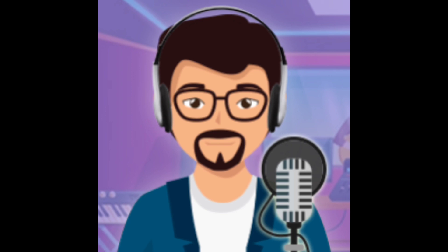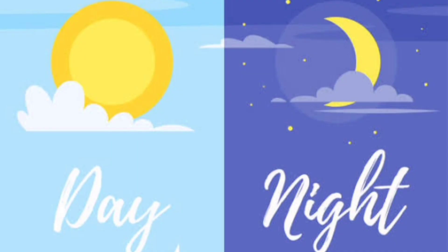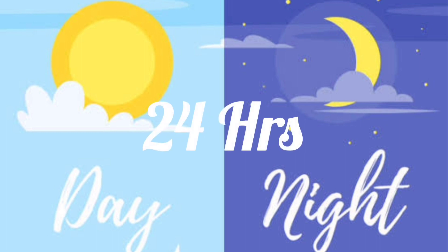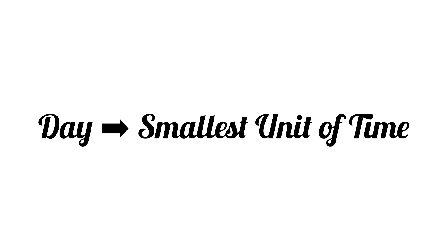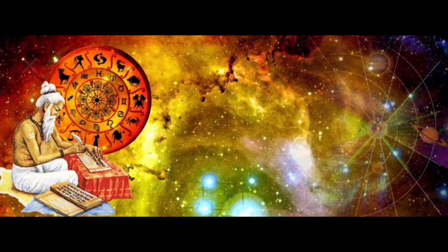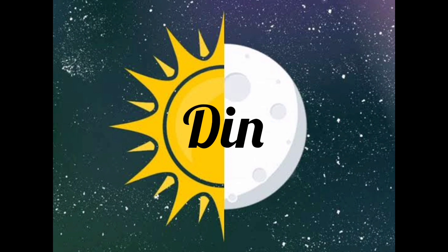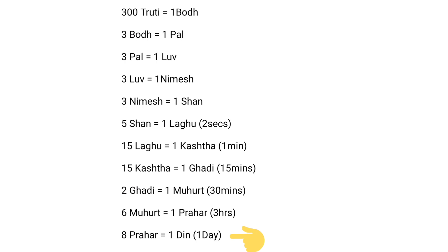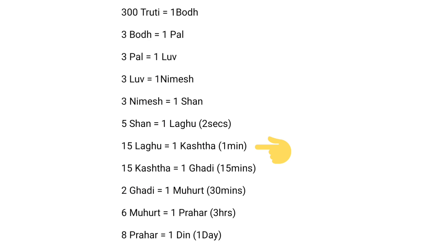Before going to the smallest unit of time, let us first talk about a complete day, which we know is of 24 hours. Now let us travel from a day to the smallest unit of time through the Vedic perspective. A day has been called a Deen by our Sanatani ancestors. 1 Deen is made of 8 Prahar. 1 Prahar, which is 3 hours, is made of 6 Muhurth. 1 Muhurth or half an hour is of 2 Ghari. 1 Ghari or 15 minutes is equal to 15 Kastha. Now 1 Kastha or 1 minute is equal to 15 Laghu.